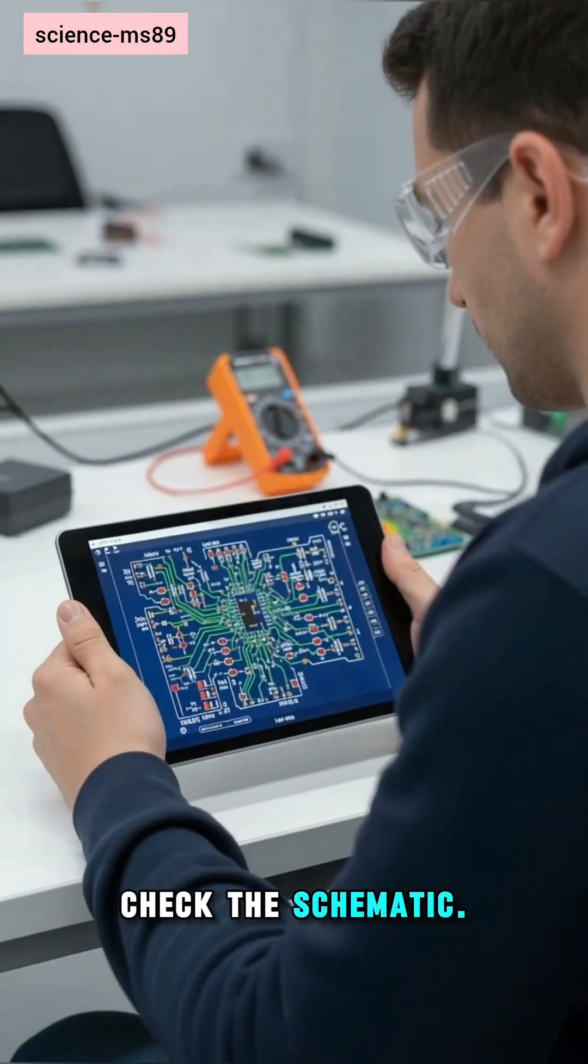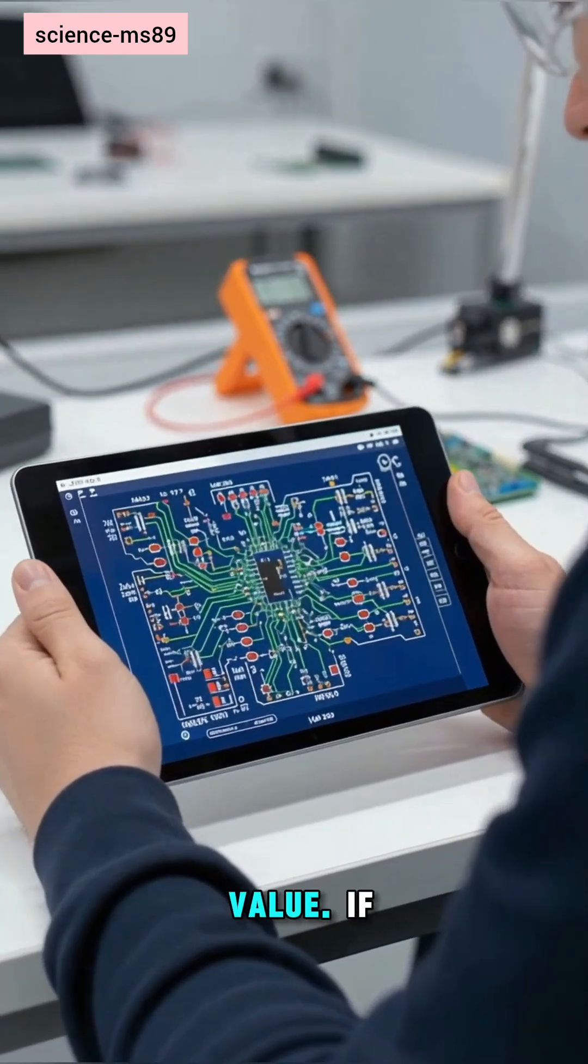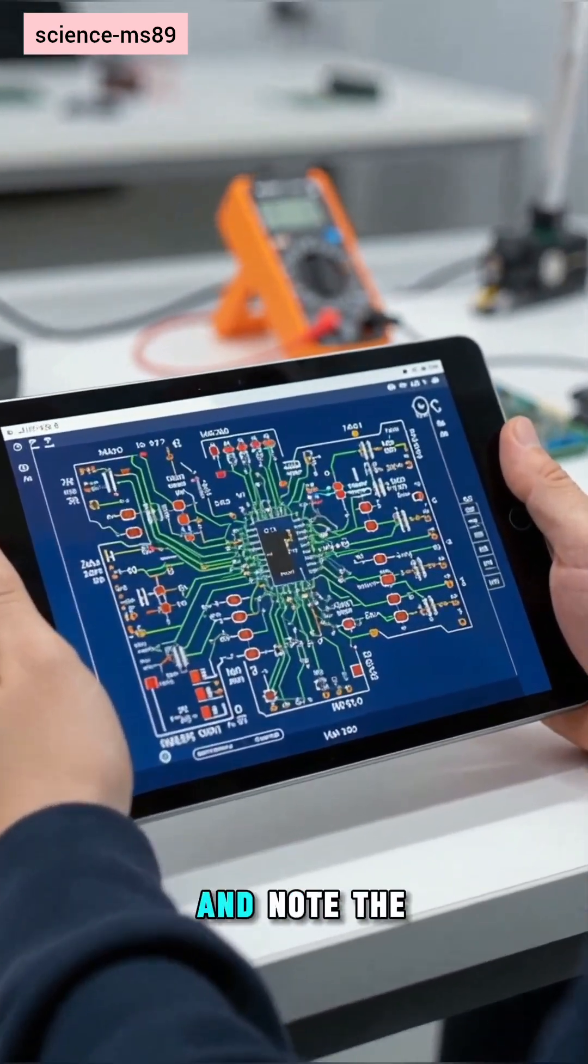Check the schematic. Find the designator and value. If missing, trace the net and note the function.